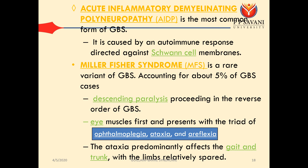Miller-Fischer syndrome is a rare variant of GBS, accounting for only about 5% of all cases. It features descending paralysis, processing in the reverse order of GBS — starting from the trunk and moving to the lower and upper limbs. It presents with a triad of ophthalmoplegia (paralysis of all the muscles of the eyes), ataxia (incoordination), and areflexia (no elicitation of reflex). Ataxia predominantly affects the gait and trunk, with the limbs relatively spared.